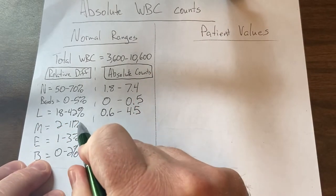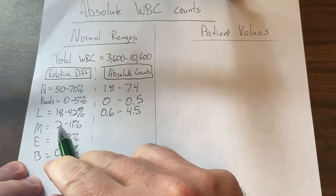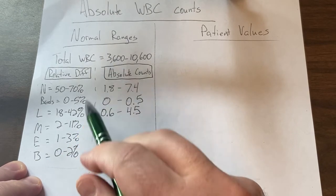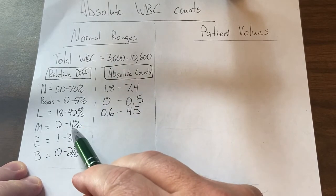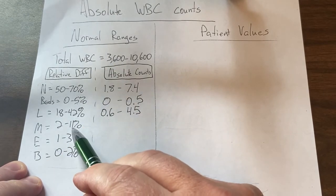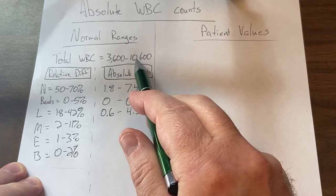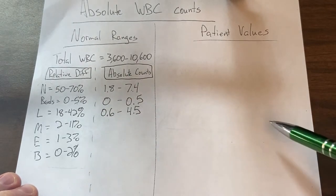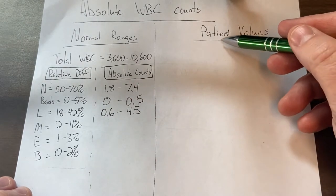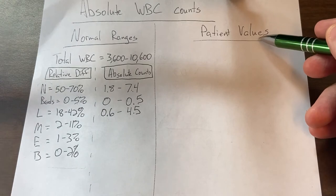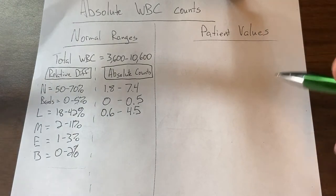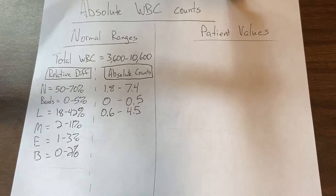You can do the remaining calculations — 0.02 times 3.6 and 0.11 times 10,600 for those values. When we calculate patient values we need the actual printout, or we can use our own differential to figure this out and estimate.